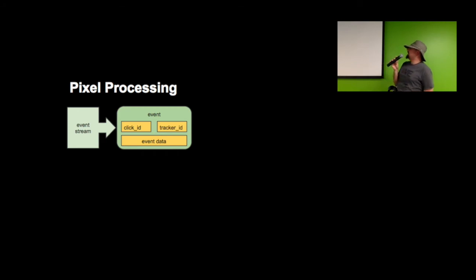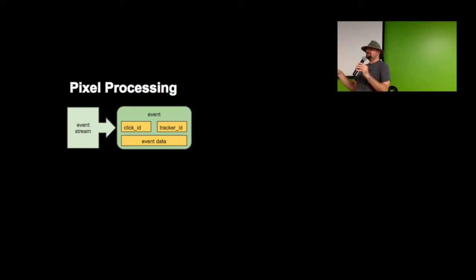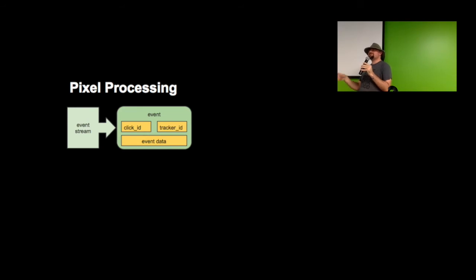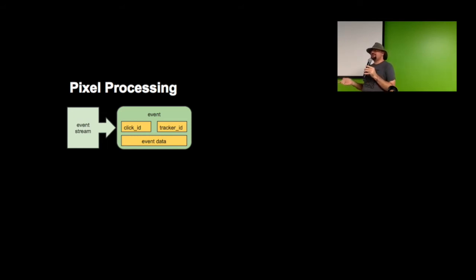Let's go through pixel processing. We have an event stream coming in supplying us with lots of events. All of these events are just little GET requests that have some header data about who the user is, what time they clicked on the ad, what the last ad they clicked on was, maybe how long they've been on the site, how many pages they've viewed. All of that data is used in determining whether a user has matched a particular conversion goal. The parts we do care about are two IDs: one we call the click ID, and one we call the tracker ID.